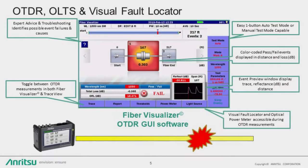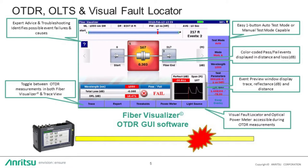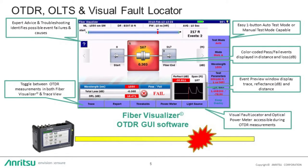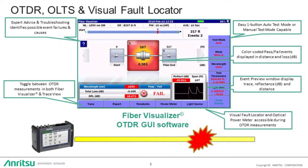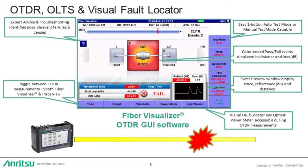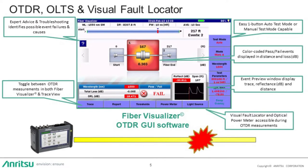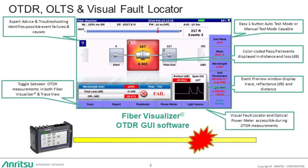The Anritsu OTDR family comes standard with the award-winning Fiber Visualizer OTDR trace software application. Fiber Visualizer converts a traditional OTDR trace measurement into an easy-to-follow icon-driven GUI display to enable field operations to identify pass-fail events quick and easy when installing and verifying optical fiber deployment.